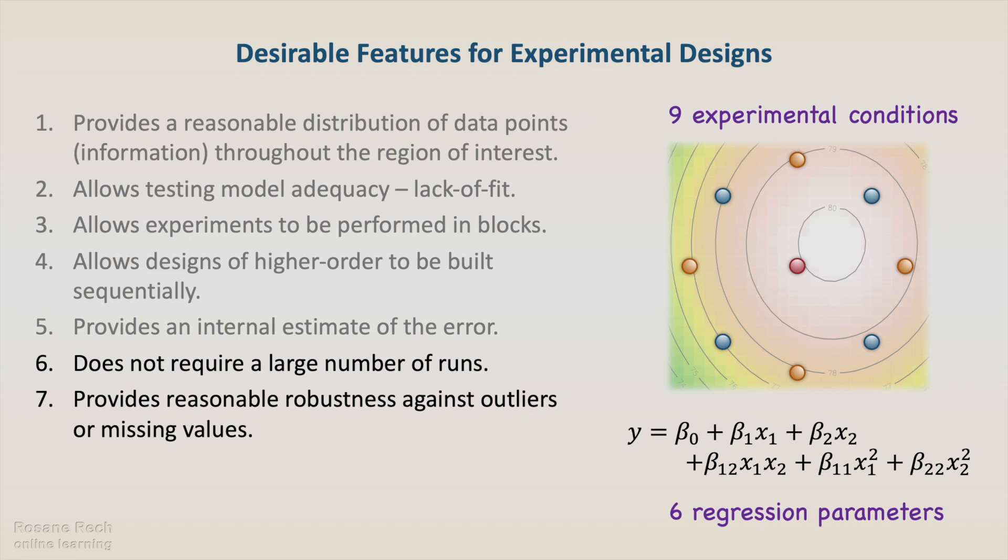Outliers are results we are not confident about and decide to discard. If the number of experimental conditions is higher than the regression parameters, even with missing results, we can still estimate the parameters of the second-order model.